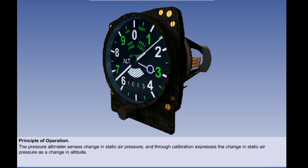The pressure altimeter can be thought of as a pressure gauge which senses change in static air pressure and, by means of calibration, expresses the change of static air pressure as a change in altitude. In order to appreciate how the altimeter works, we first have to look at the atmosphere and how altitude affects static air pressure.